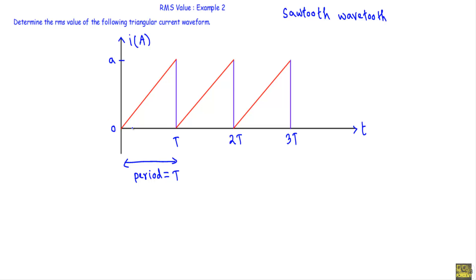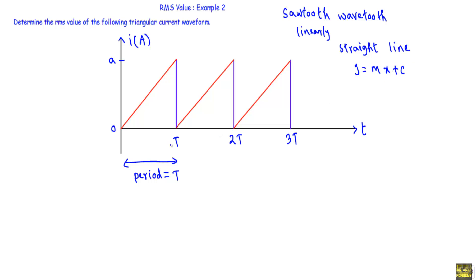If we look at the current waveform, from zero to T our waveform will be changing linearly. Therefore we can express the change in current within a full cycle using the equation of a straight line. We can express the change from zero to T interval of the current using the standard straight line equation y = mx + c.